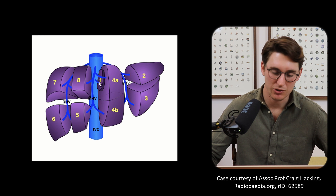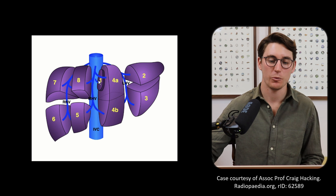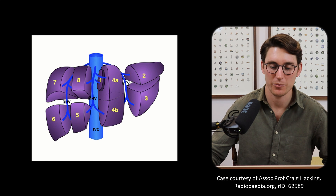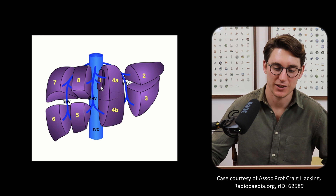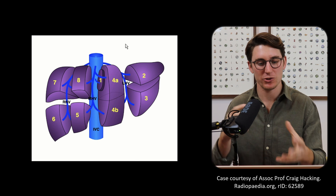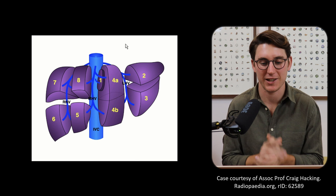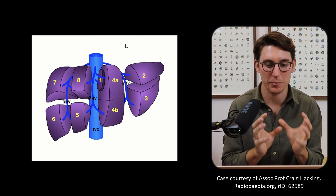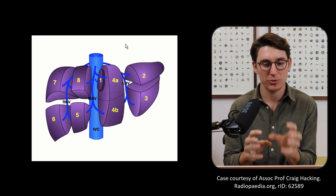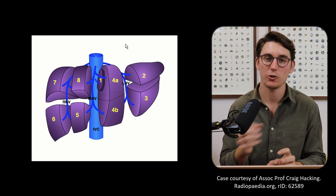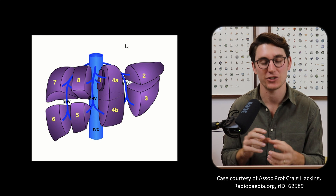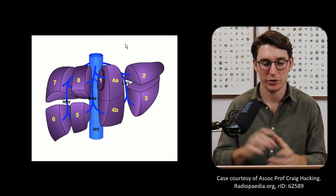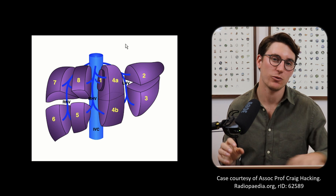Segment one is the caudate lobe — it has its own little vein coming in and is very easy to identify on a CT scan separate from the rest of the lobes. It acts as its own functional unit. Back in the day we used to separate the lobes based on their morphology, but now we prefer to separate them into these segments because each segment acts as its own independent functional unit. So segment eight, for example, would be able to survive on its own because it has its own blood supply, its own venous, biliary, and lymphatic drainage. This helps clinically — if we were to remove a segment or leave a segment behind, we know that segment would function independently of all the others.